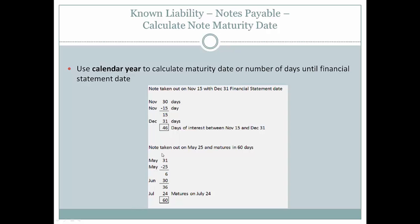Now let's look at a scenario where the note is taken out on May 25th and matures in 60 days. May has 31 days; subtracting 25 leaves 6 days in May. June has 30 days, giving 36 days through the end of June. July has 31 days, but adding all 31 would exceed 60 days, so we need 24 more days in July to reach 60 total. Therefore, the note matures on July 24th.